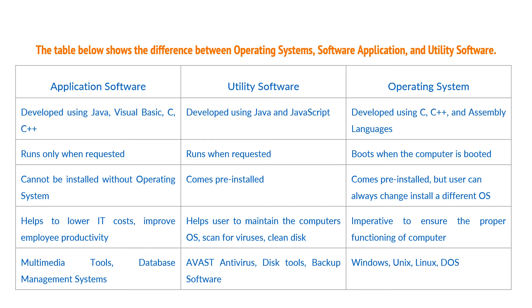Application software helps to lower IT costs and improves employee productivity. Utility software helps to maintain the computer's operating system, scan for viruses and clean the disks. The operating system is imperative to ensure the proper functioning of a computer.